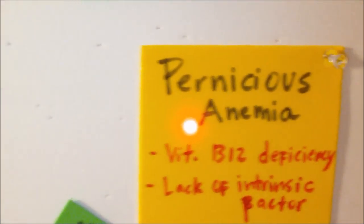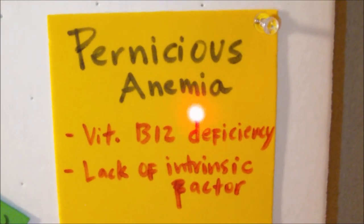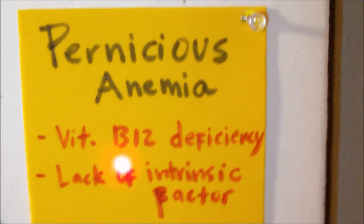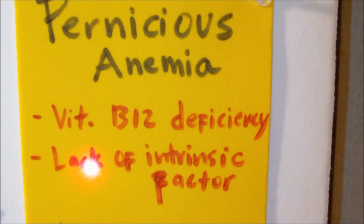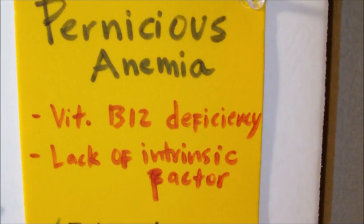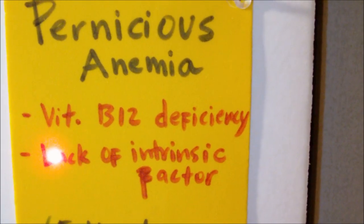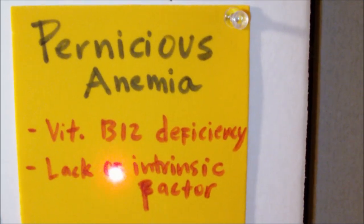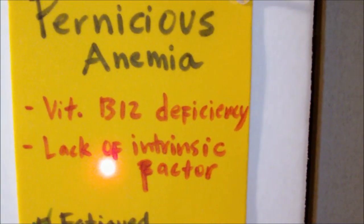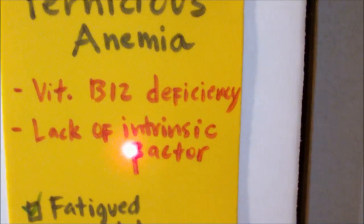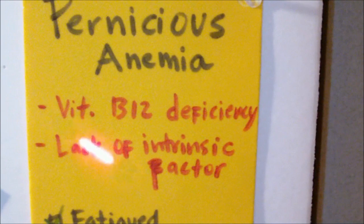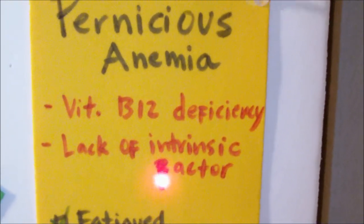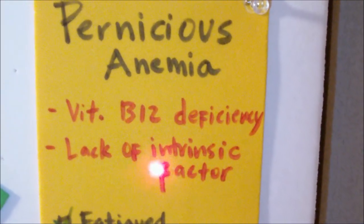Now let's talk about pernicious anemia. Pernicious anemia is basically a vitamin B12 deficiency in which the body loses its ability to absorb vitamin B12. This can be due to poor intake of foods containing vitamin B12, or it can be caused by a deficiency of the intrinsic factor — a substance secreted within our gastric mucosa that is needed for intestinal absorption of vitamin B12. Without the intrinsic factor, the body cannot properly absorb vitamin B12 regardless of diet.